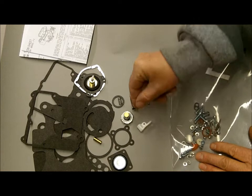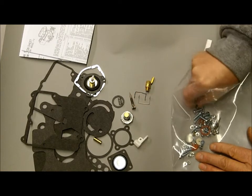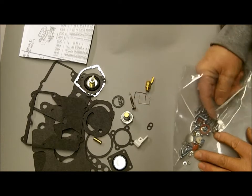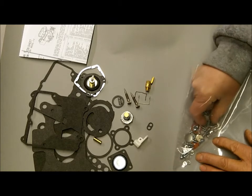We got a new fast idle lever, which tends to break easily on these 2100s, so we include that. Little gasket for your choke, there's your other idle mixture screw, and screw.